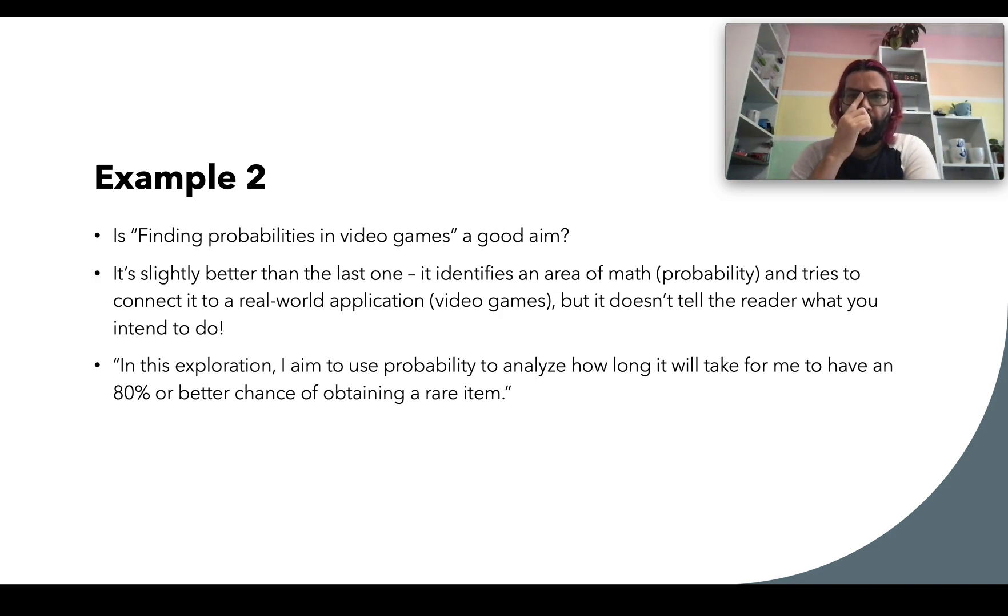of ways that you could turn this idea into a better AIM. And these might be a little bit weirder than the Pythagorean Theorem one was, because there's a lot of different kinds of video games, and I'm trying to kind of talk about them in general. So one of them, in this exploration, I aim to use probability to analyze how long it will take for me to have an 80% or better chance of obtaining a rare item.